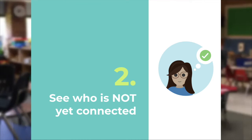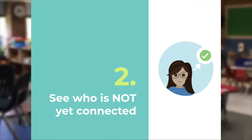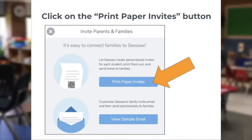Alright, let's talk about step two. We want to make sure that if you've already invited families, but there are a few family members not yet connected, I'm going to show you how to see who those family members are. Step two: see who is not yet connected to your Seesaw class. Sign in as a teacher and click on 'Families' in the bottom right. This time you're going to want to choose 'Print Paper Invites.'